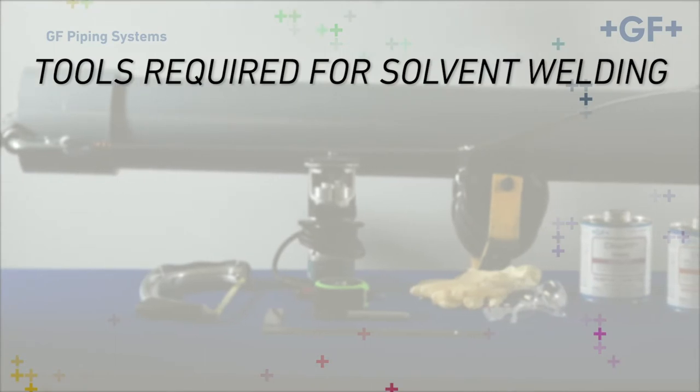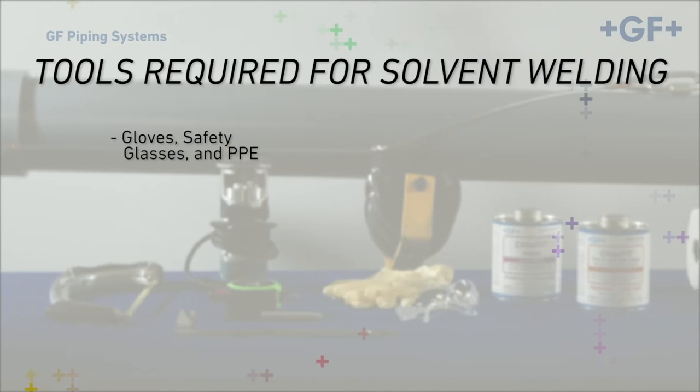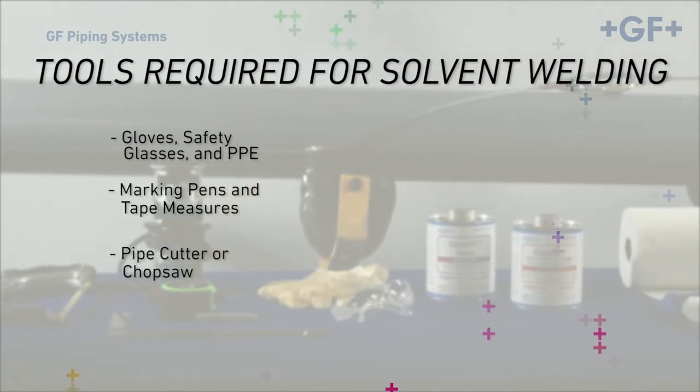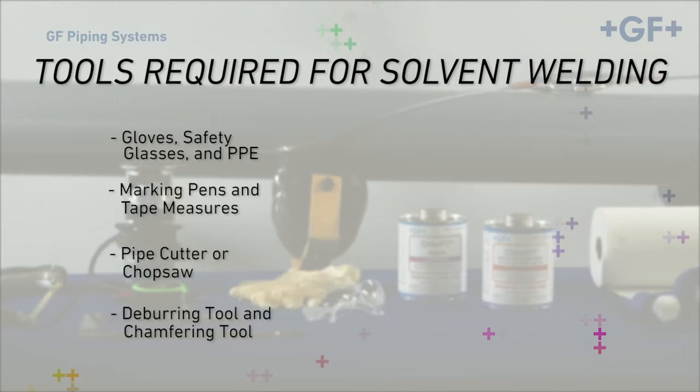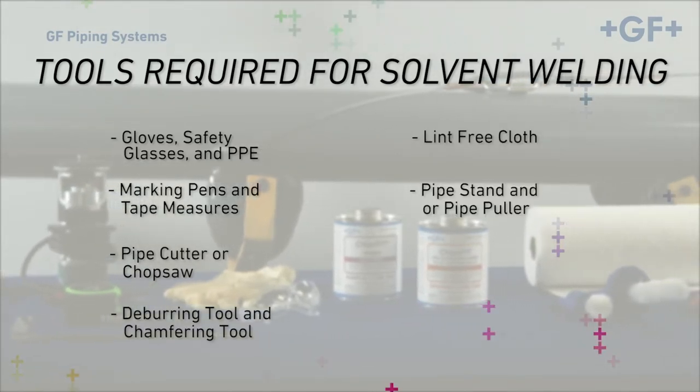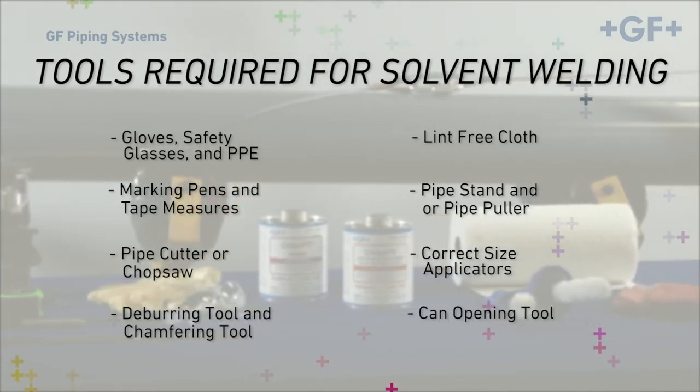The tools required for solvent welding are as follows: gloves, safety glasses, and personal protective equipment; marking pens and tape measure; appropriate pipe cutter or chop saw; deburring and chamfering tools; lint-free cloth; pipe stand and or pipe puller; and correct size applicators for the size of the joints being solvent welded.